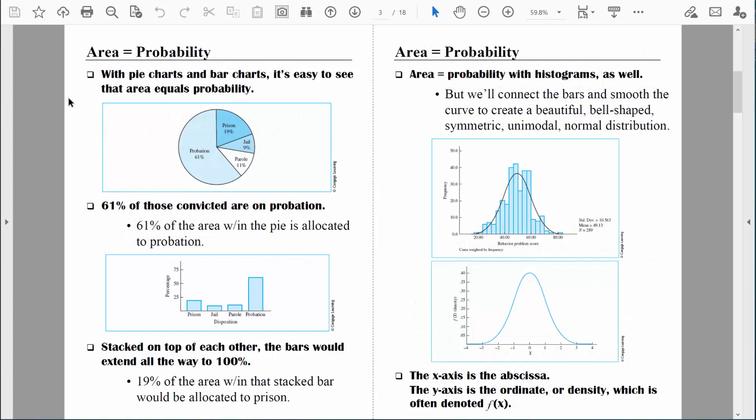Although we've been talking about normal distributions, you're probably still more familiar with pie charts and bar charts. And really, when it comes to pie charts and bar charts, it's easy to see that area equals probability.